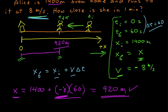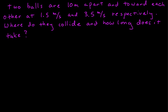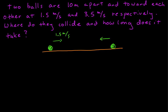Now let's do another problem with two objects. Two balls are 10 meters apart and roll toward each other at 1.5 meters per second and 3.5 meters per second respectively. Where do they collide and how long does it take? Our goal is to practice a problem-solving strategy for harder problems. Starting with our picture: we have two balls rolling toward each other, one at 1.5 meters per second and the other at 3.5 meters per second. They'll eventually collide, and I predict it'll be somewhere closer to the 1.5 meters per second ball.